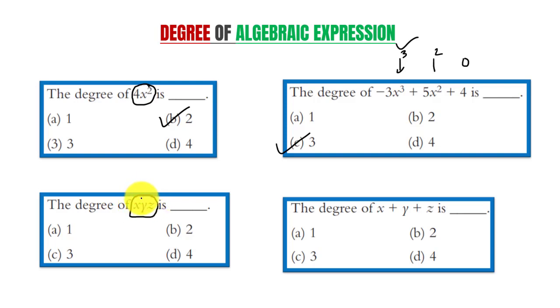Here exponent of x is 1, exponent of y is 1, and exponent of z is equal to 1. Now we will add all exponents which is equal to 3. Hence degree of xyz is equal to 3. So c is the right answer.